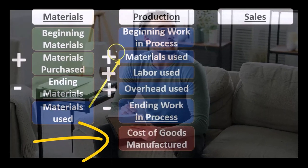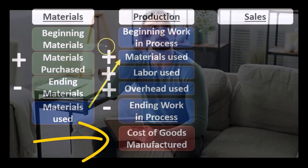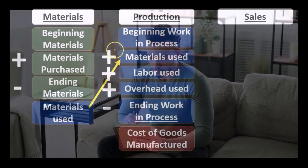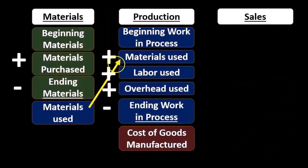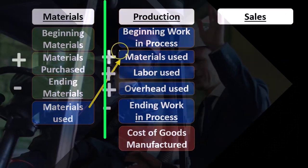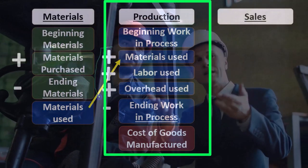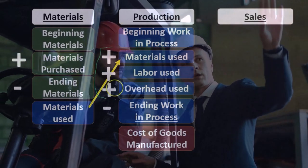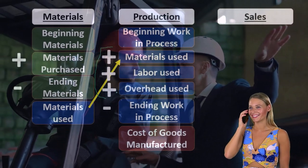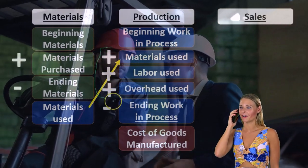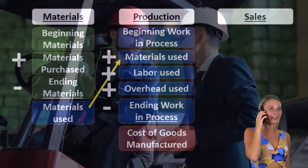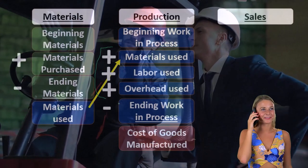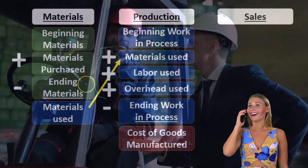That'll give us the cost of goods manufactured. These two calculations are similar in nature: we had beginning work-in-process, and then not purchases, but the materials used and all the labor — these three items being what we added to it, what we made. We added the labor and the overhead, all costs we put into it. We could then have a subcategory of work-in-process available, and then subtract out the ending work-in-process.